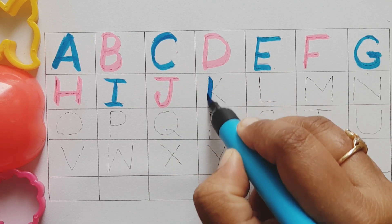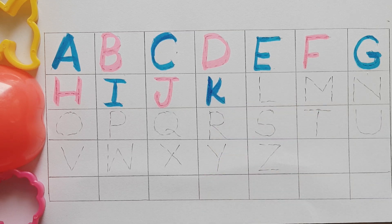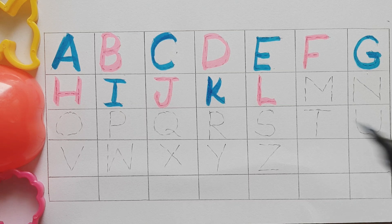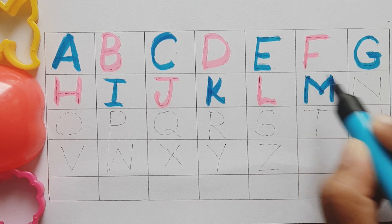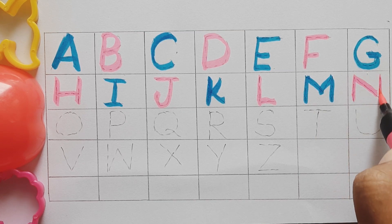K, K for kite. L, L for lemon. M, M for mango. N, N for nest.